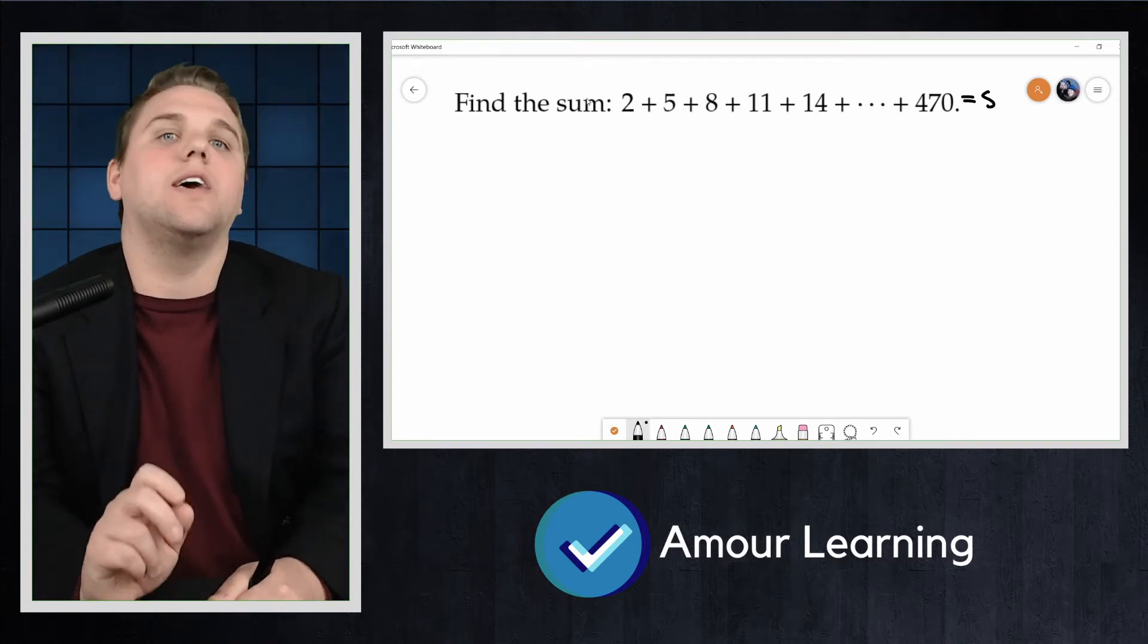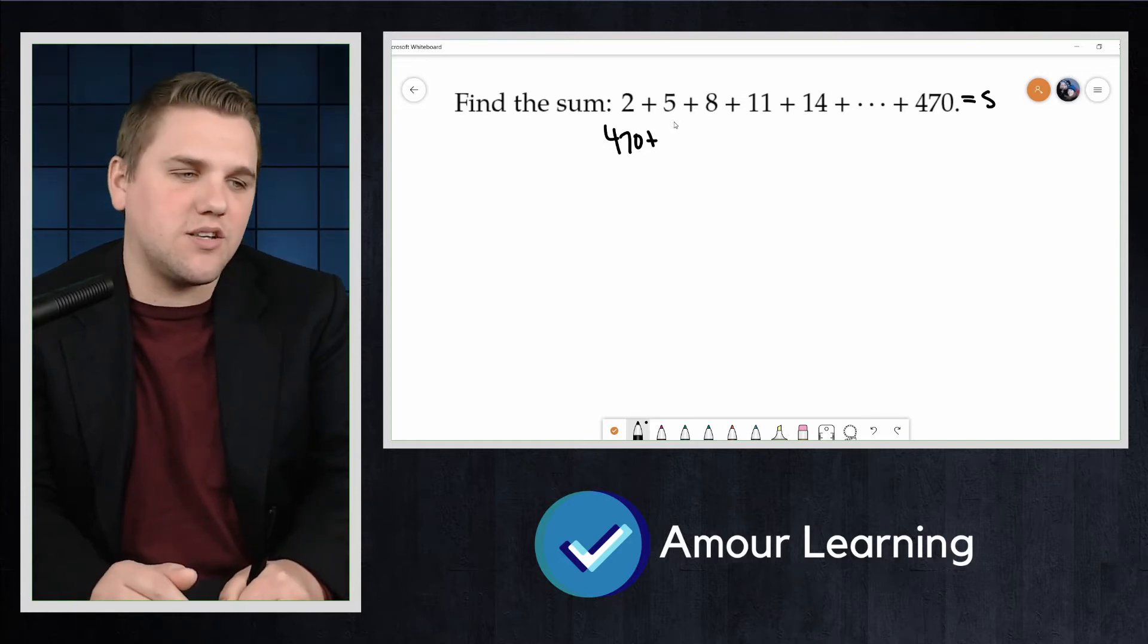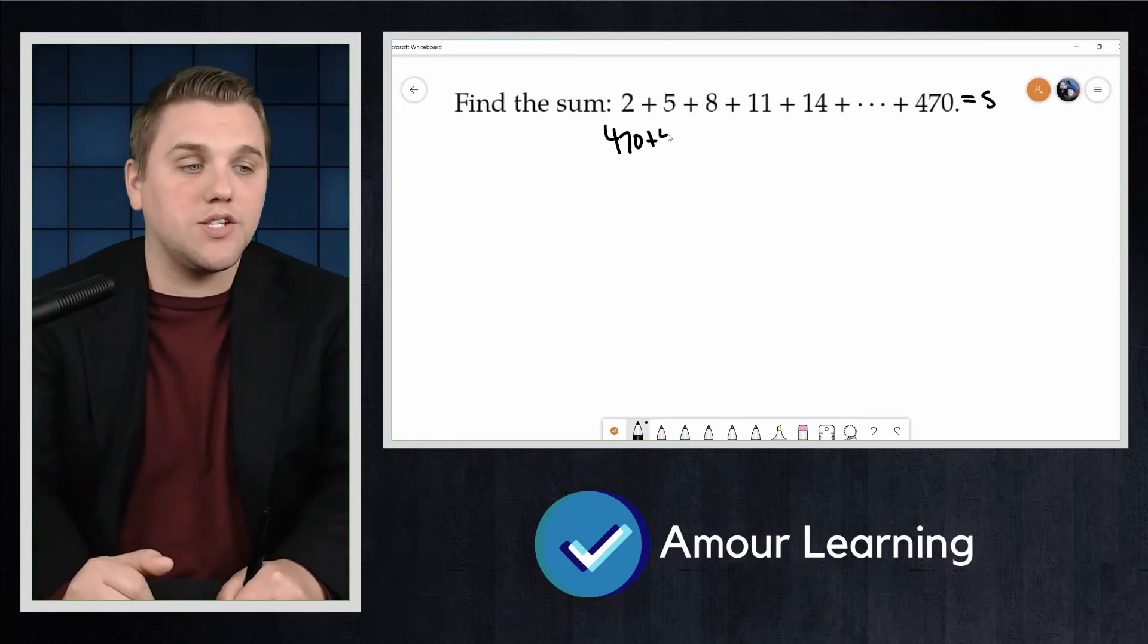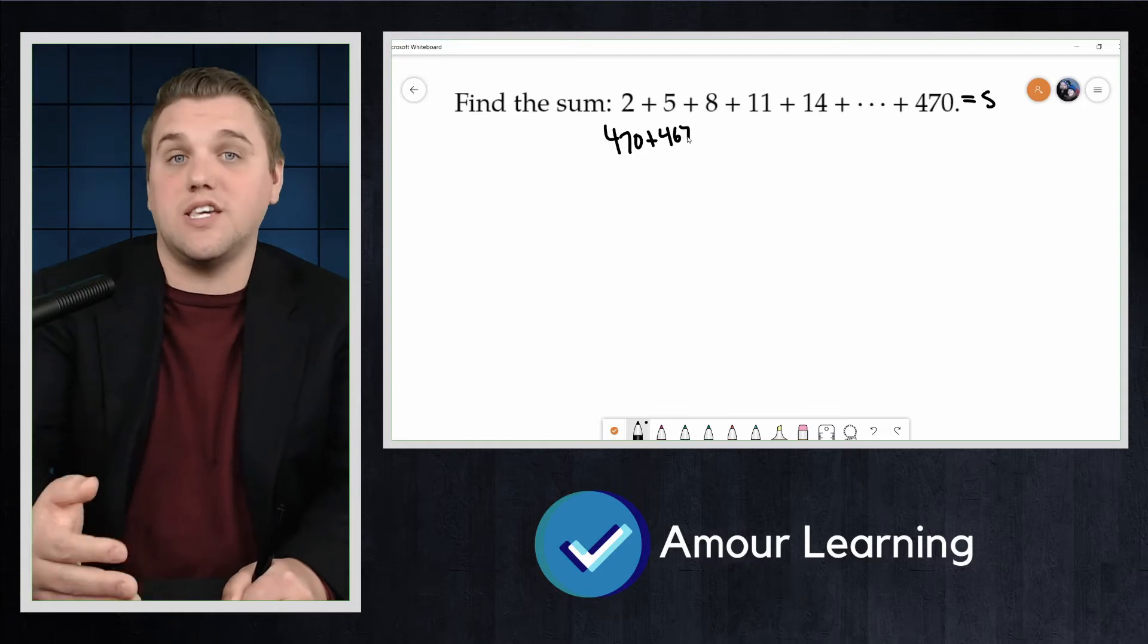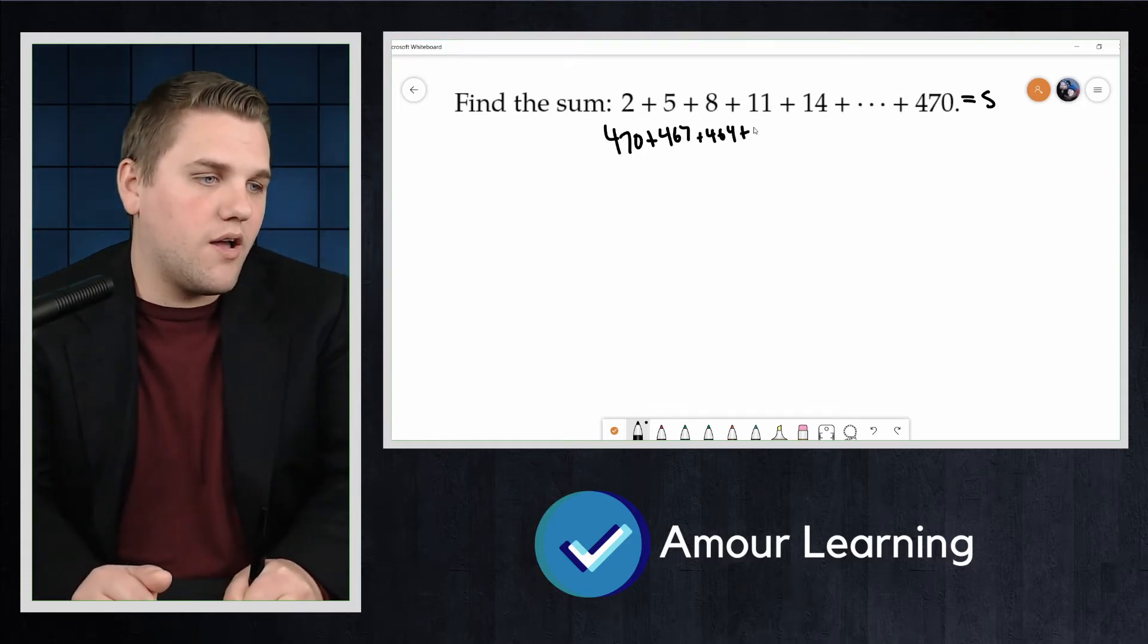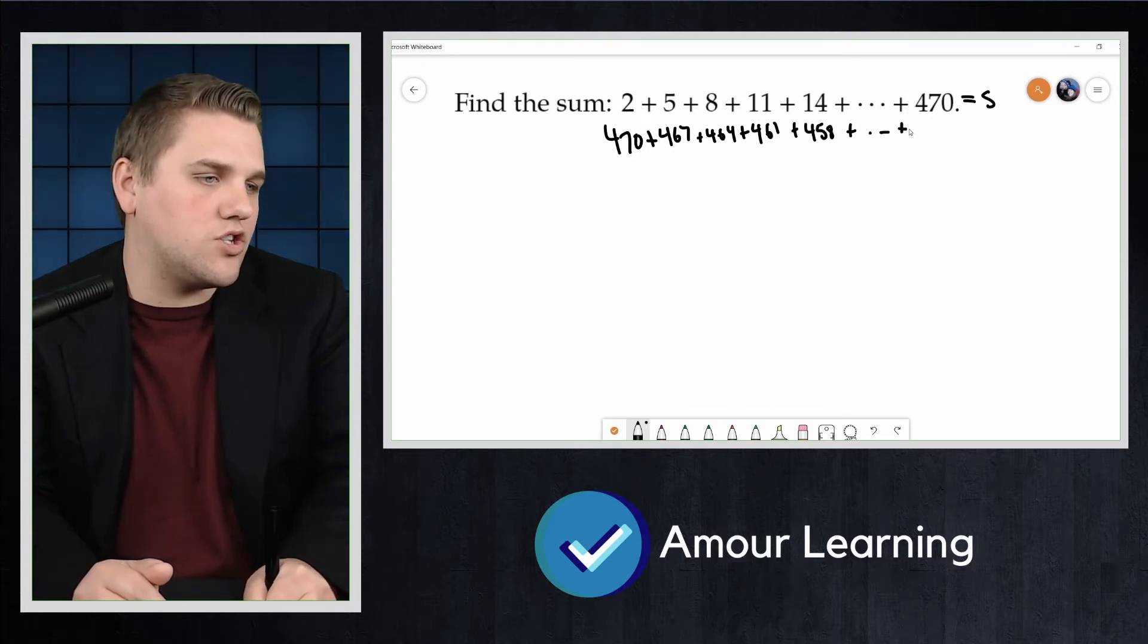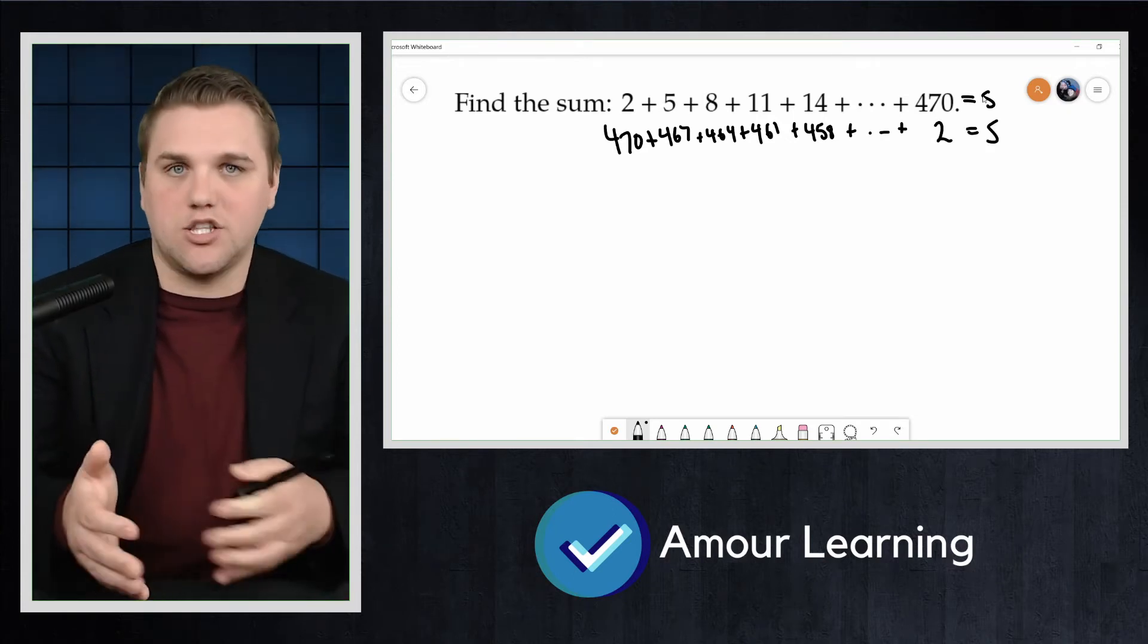But let's rewrite s in reverse order, where we start with 470, and then the term before that was 467 since each difference here is 3, plus 464, plus 461, plus 458, all the way down to 2. So this is also s.